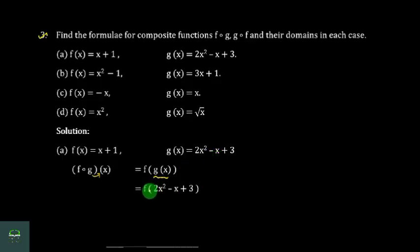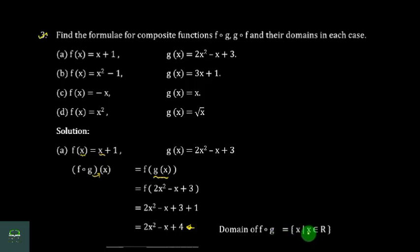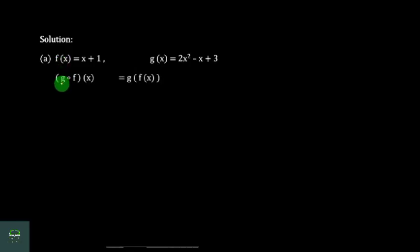The formula for composite functions F of G. So, F of G is the equation of F of G. This formula for composite functions F of G gives h of s plus 1.